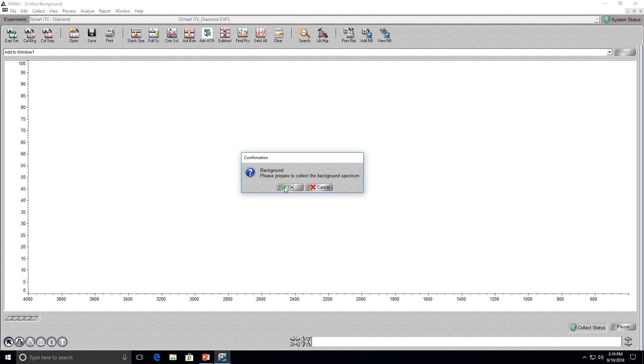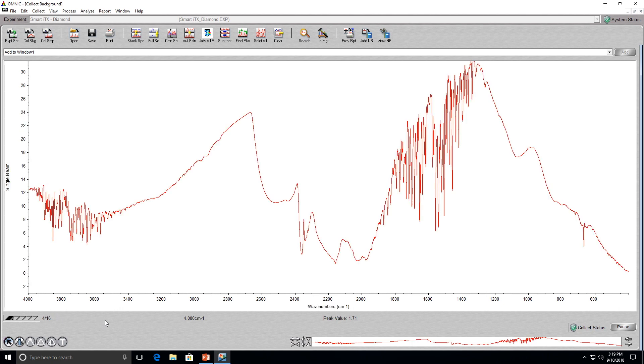A box will show up saying please prepare to collect the background spectrum. Once you click the ok button the software and instrument will start taking the background scan. In total this will take 16 scans and combine them together. This shouldn't take more than 20 to 25 seconds.